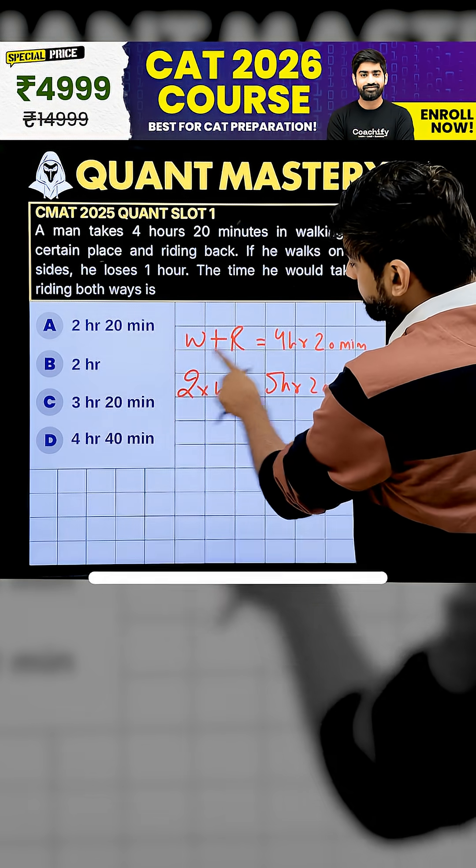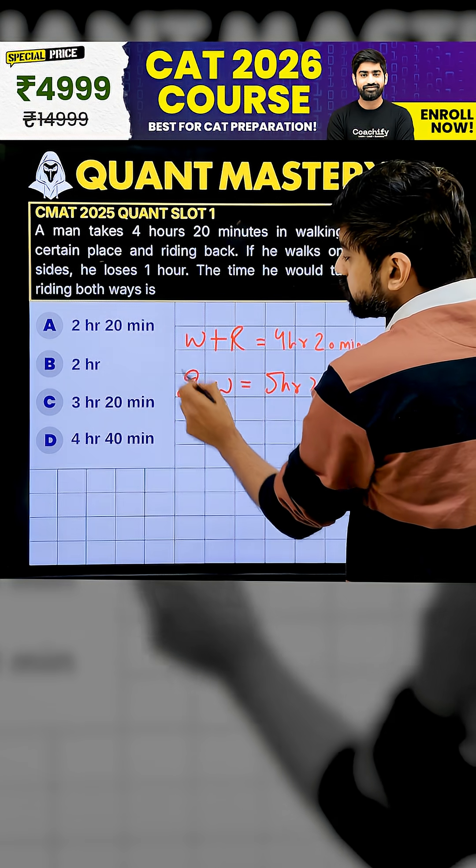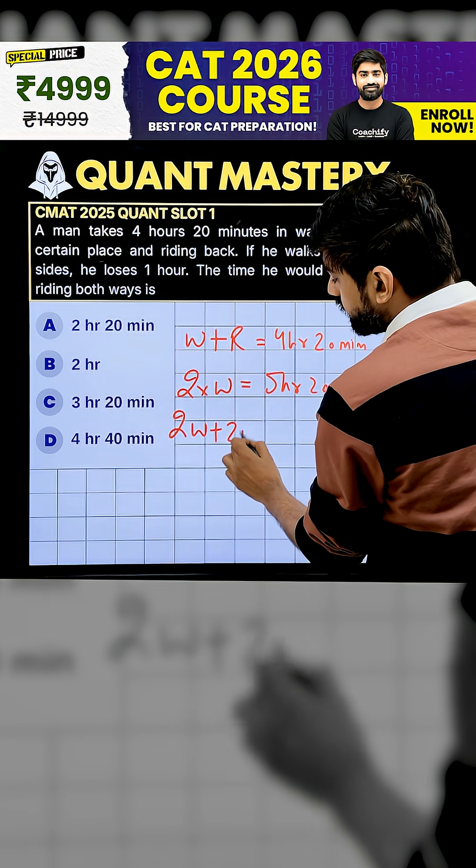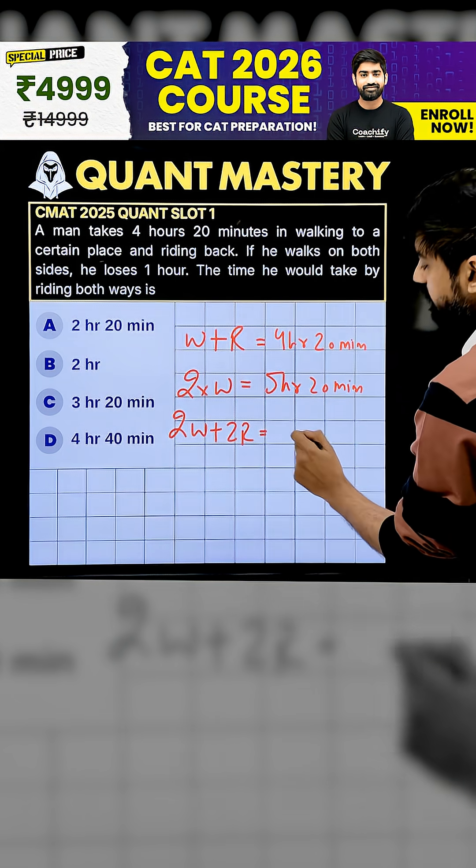Now, if we double it, then this becomes 2W plus 2R. And this will be 8 hours 40 minutes.